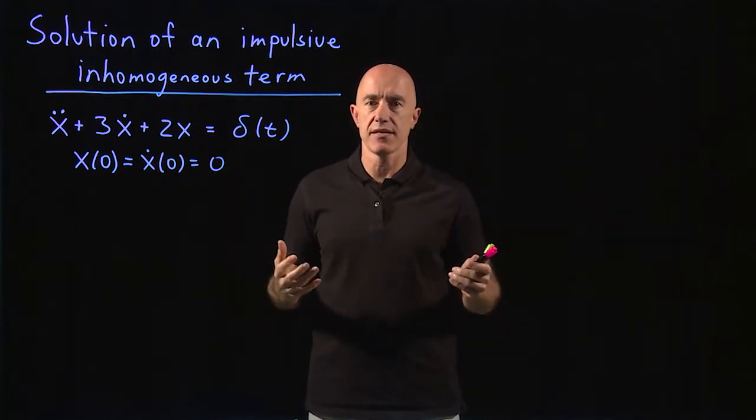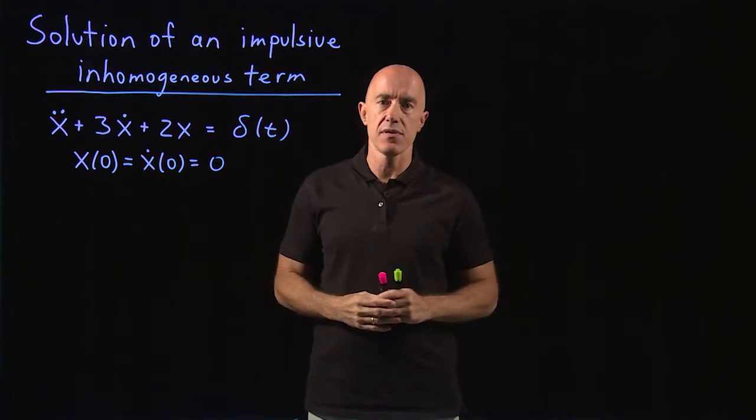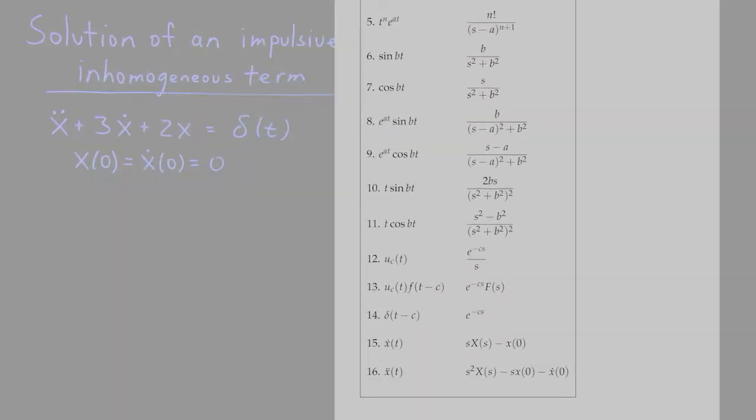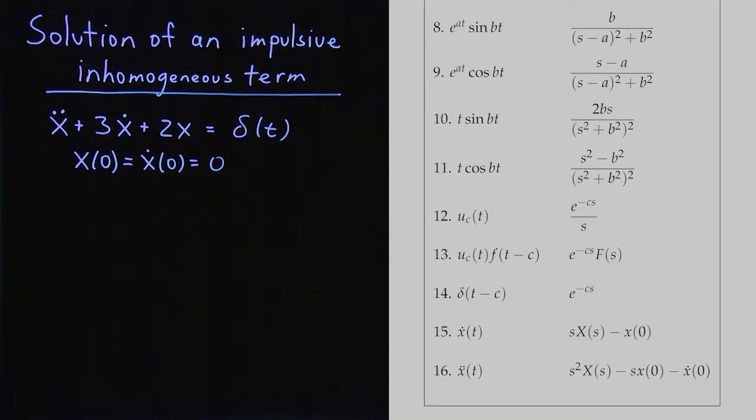So the easiest thing is to have a look at the table. So we have homogeneous initial conditions, so x of zero and x dot of zero equals zero. We apply line 16 to take the Laplace transform of the second derivative.